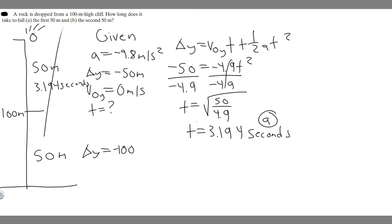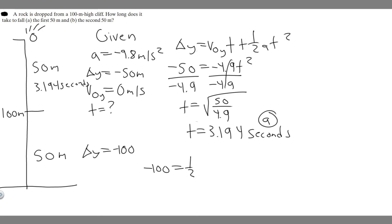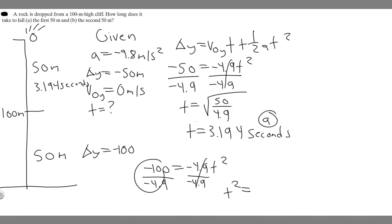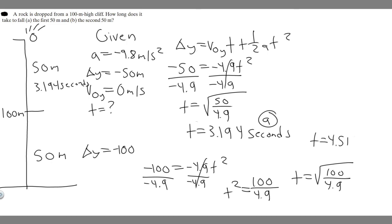Using the same equation: delta y equals -100, which equals zero times t (drops out), plus one-half times -9.8 times t-squared. Simplifying, -100 equals -4.9 t-squared. Dividing both sides by -4.9, t-squared equals 100 over 4.9. Taking the square root, t equals approximately 4.5175 seconds for the full 100-meter fall.